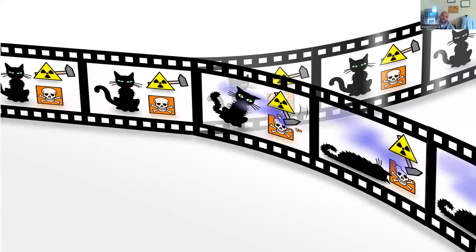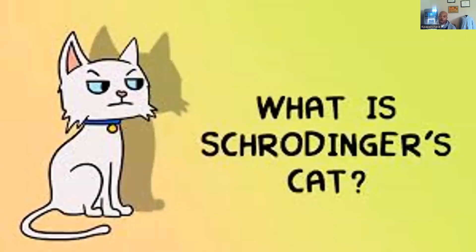Schrödinger's Cat was an experiment to see how particles and atoms react on a microscopic level, because if we can see how that works it should work the same on our level. It's a thought experiment: the cat is locked in a box with a sheet over it so you can't see it. There's a nuclear vial with a 50% chance of breaking — if it breaks the cat dies, if it doesn't the cat lives.